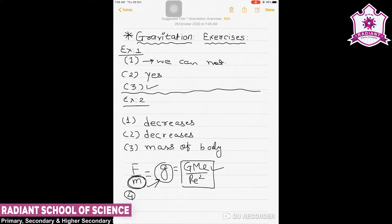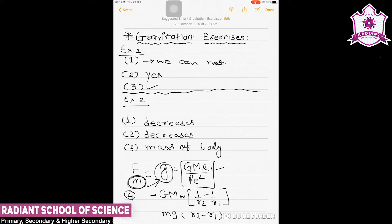The fourth question gives the formula G·m·M (1/r₂ − 1/r₁). We are asked whether this is more or less accurate than the formula mg(r₂ − r₁). We can answer that G·m·M (1/r₂ − 1/r₁) is more accurate than the formula mg(r₂ − r₁), since it uses the more precise gravitational formula.